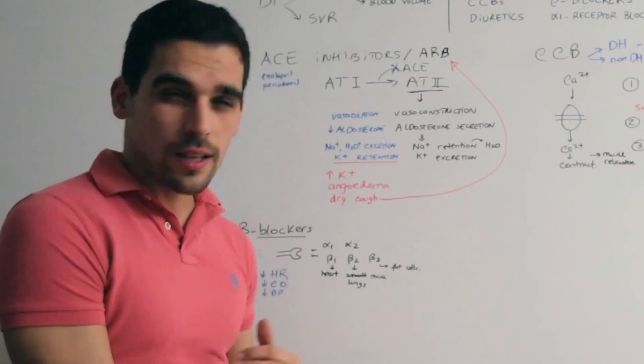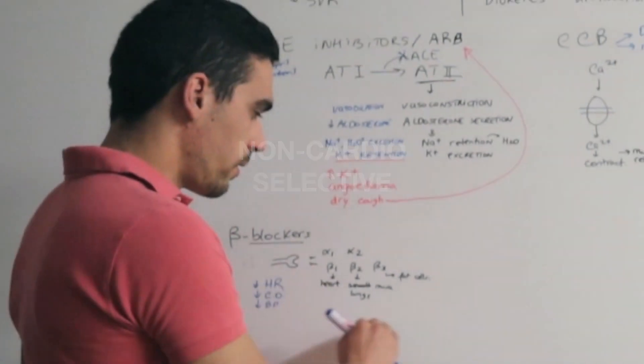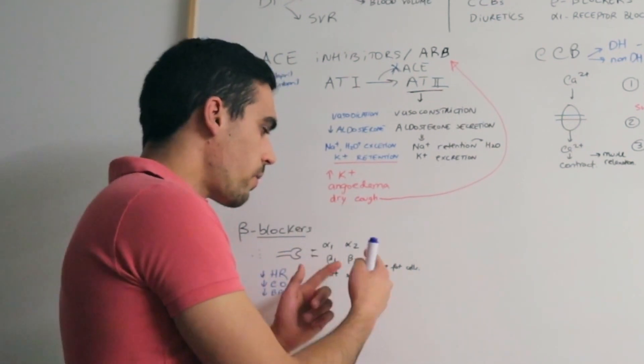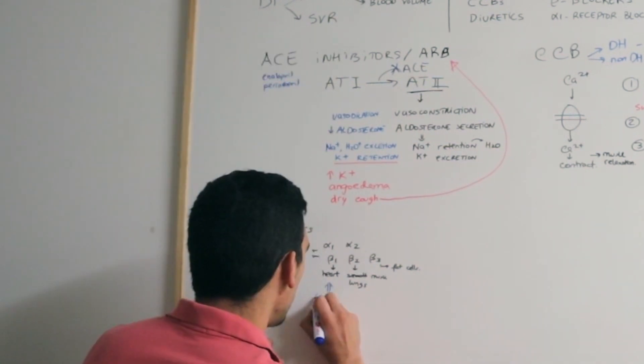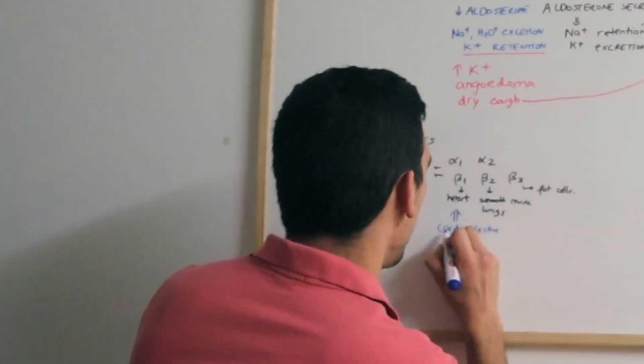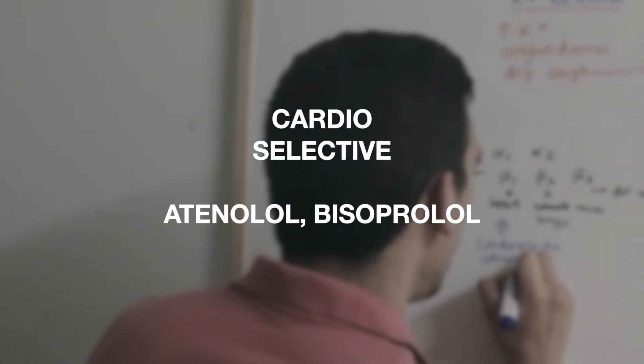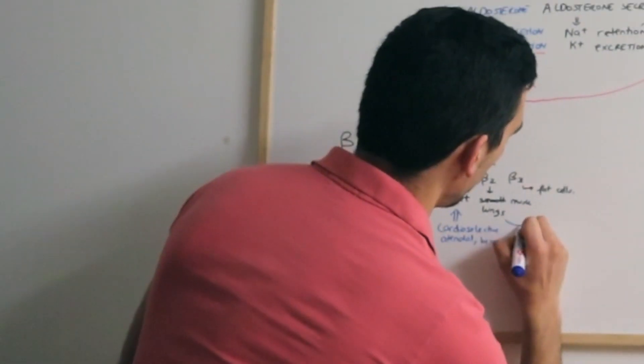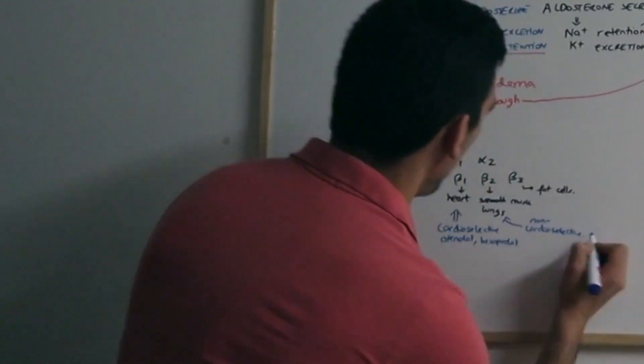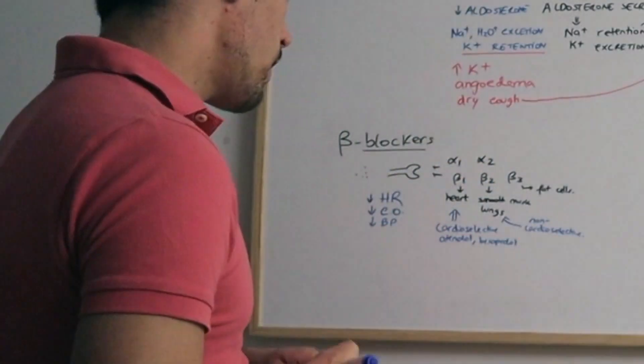We have some that are non-cardioselective. That means they will act not only on the beta-1, but on the beta-2, and also block the beta-3. Cardioselective, we have atenolol as an example, and bisoprolol.